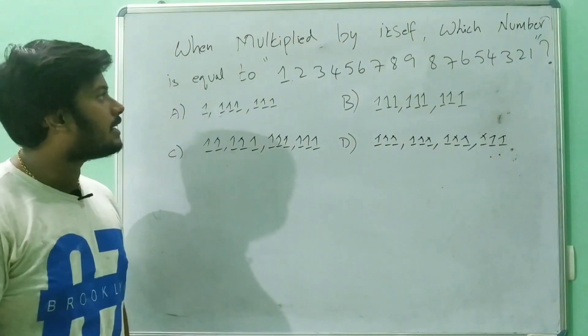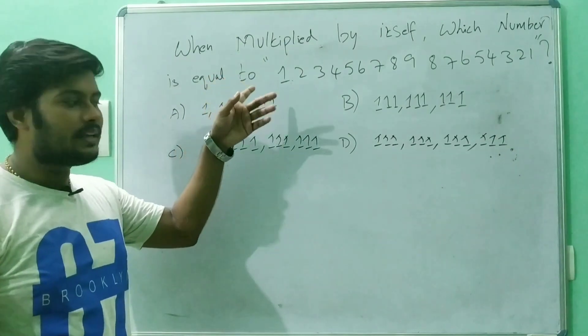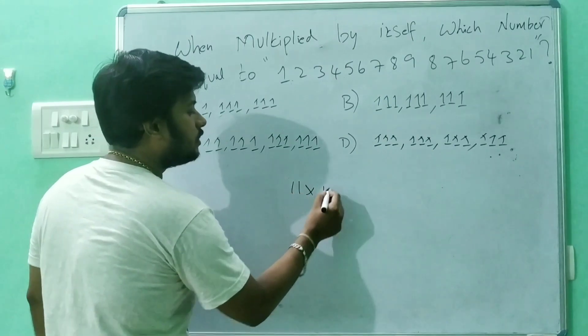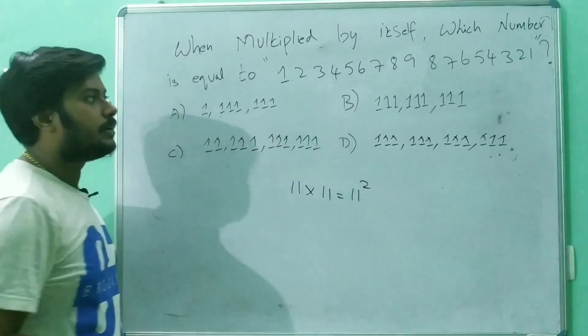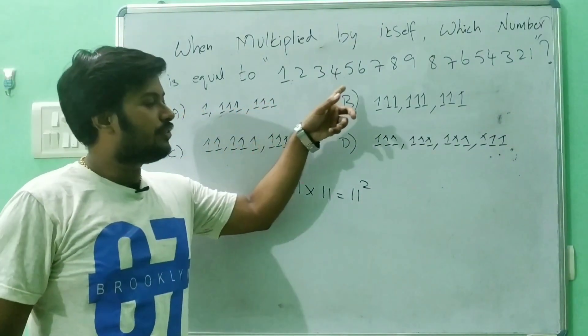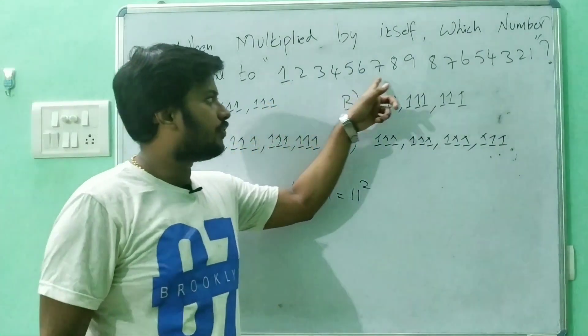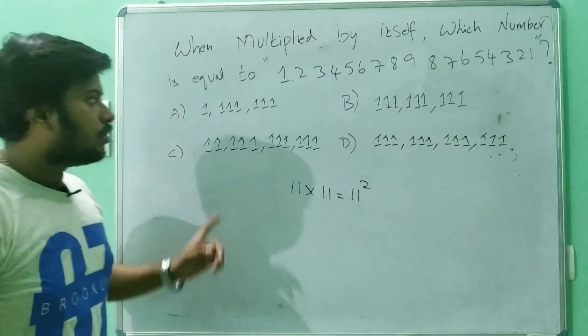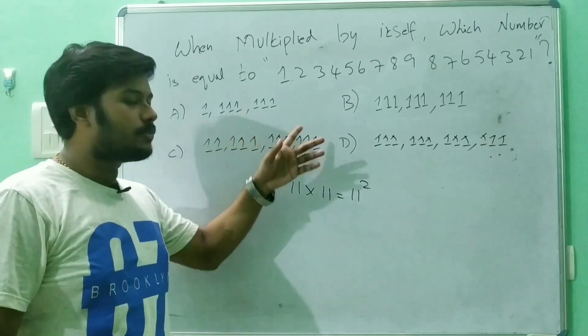The question is: when a number is multiplied by itself, that is a into a or b into b or 11 into 11, that's called a square number. Which number, when multiplied by itself, equals the 17-digit palindrome number 123456789876543210? The answer is given as option A, B, C, or D. You have to find which option is right.